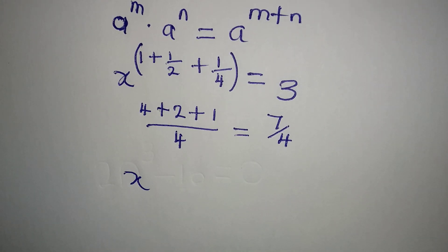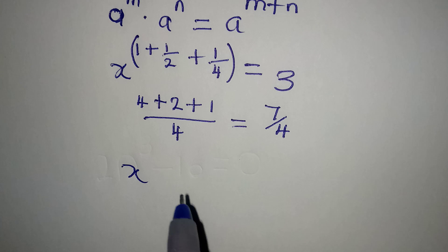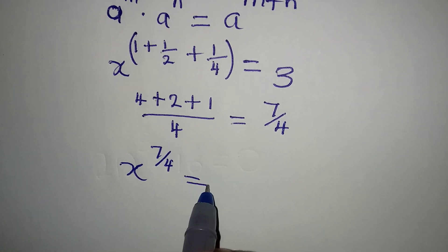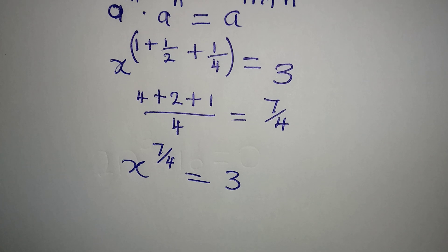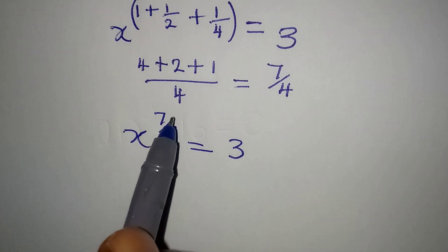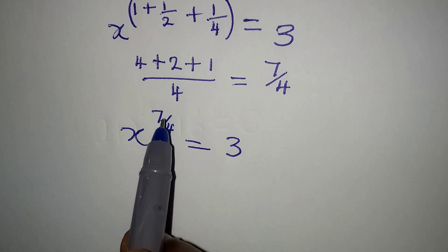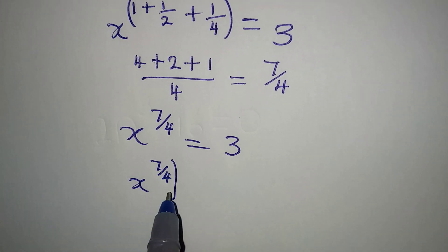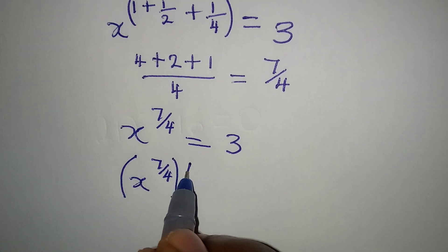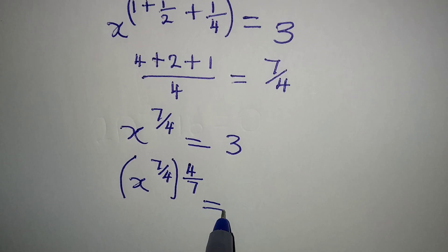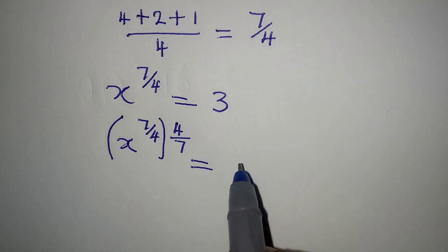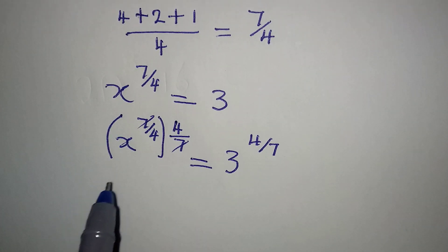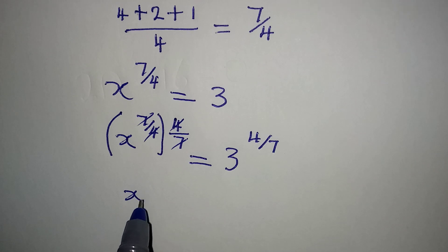This means that we have x to the power of 7 over 4 being equal to 3. Since we are looking for the value of x, we need to remove this power, and we do that by multiplying the power by its reciprocal. So we have x to the power of 7 over 4, and we raise both sides to the reciprocal power of 4 over 7. This reciprocal is applied to the right side as well, giving us 3 to the power of 4 over 7.